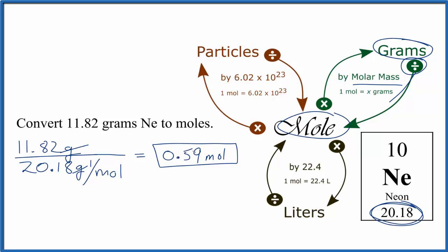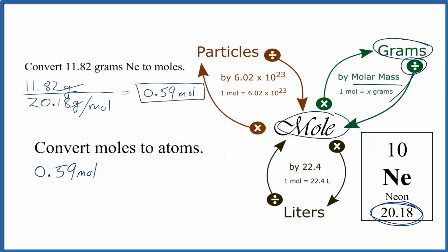Now we can take the moles of neon and convert that to atoms of neon. So we found we had 0.59 moles, and when we're going from moles to particles, and particles are atoms, molecules, or ions—here we're talking about atoms—we multiply by Avogadro's number. That'll look like this.